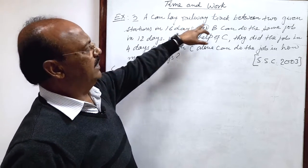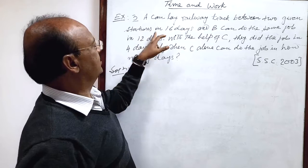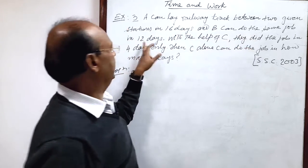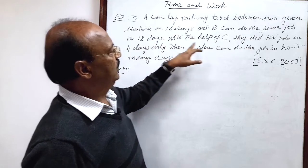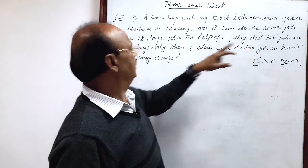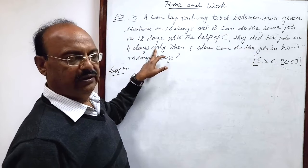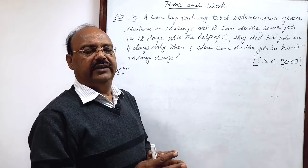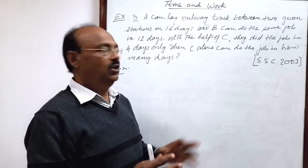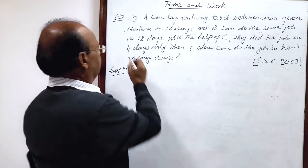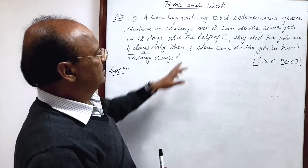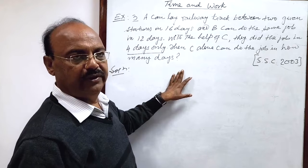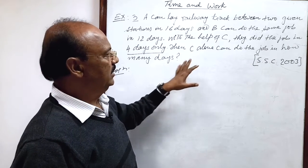A can lay railway track between two given stations in 16 days and B can do the same job in 12 days. With the help of C they did the job in 4 days only. If all the three persons A, B and C work together the number of days required for doing this job is only 4 days. Then C alone can do the job in how many days if the job is being done by C only.